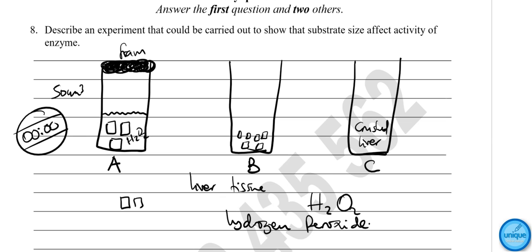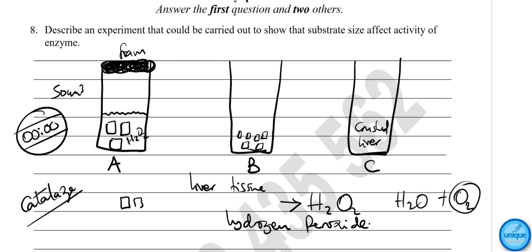The enzyme found in liver tissue is called catalase. Catalase facilitates the breaking down of hydrogen peroxide into water and oxygen gas. This oxygen is indicated by the bubbles produced, which form a foam. You have to record the time taken for the bubbles to rise to the top of the beaker.